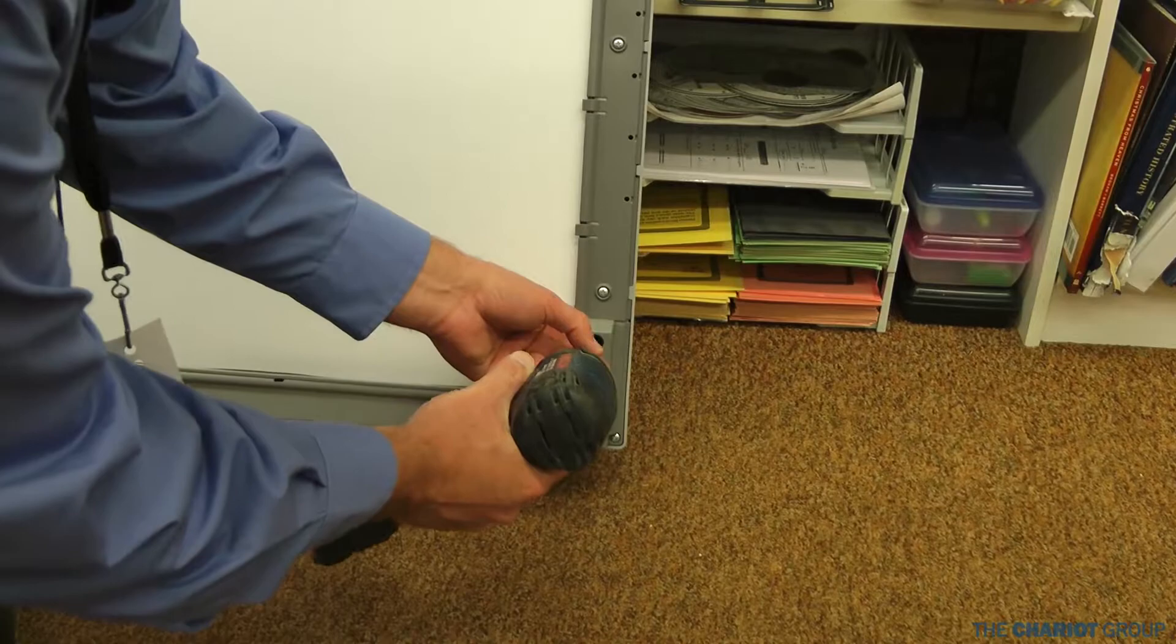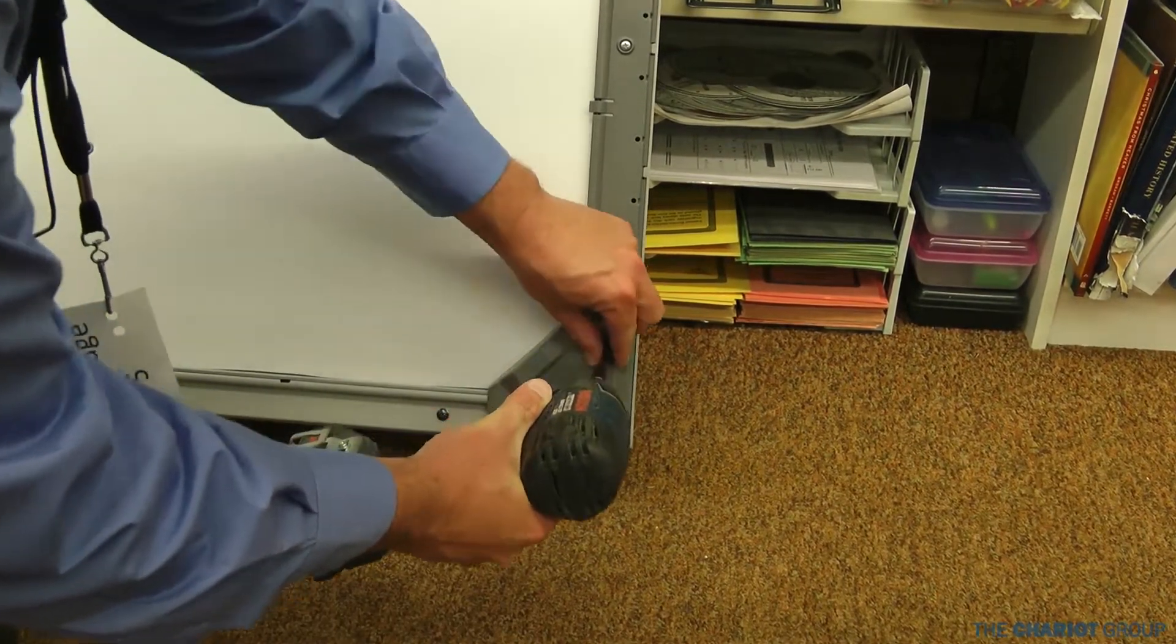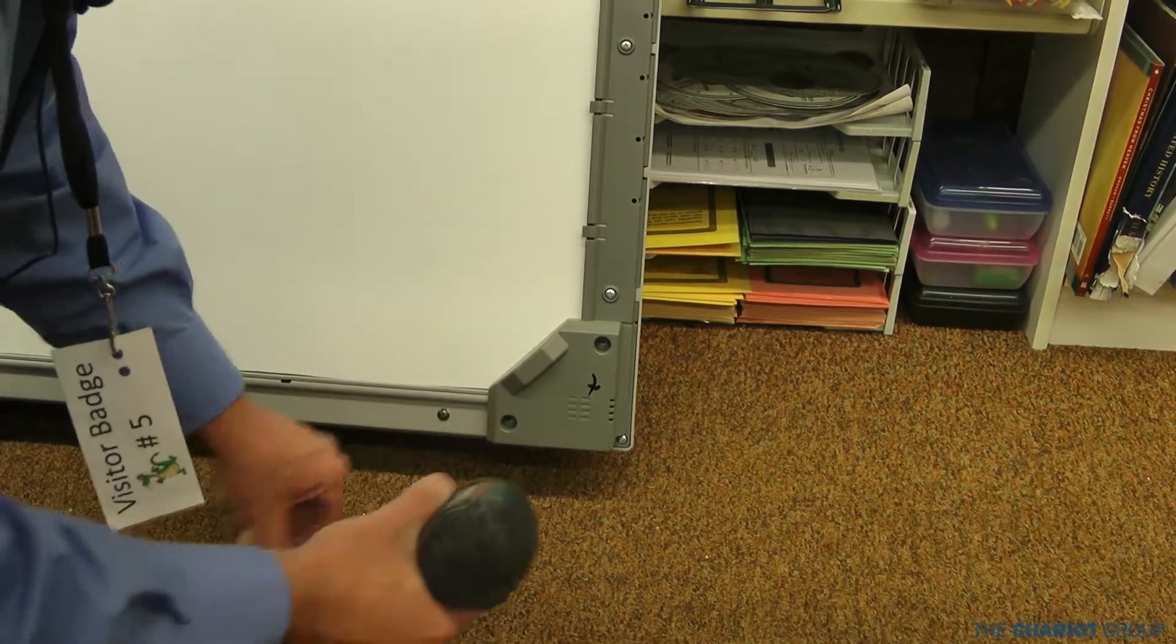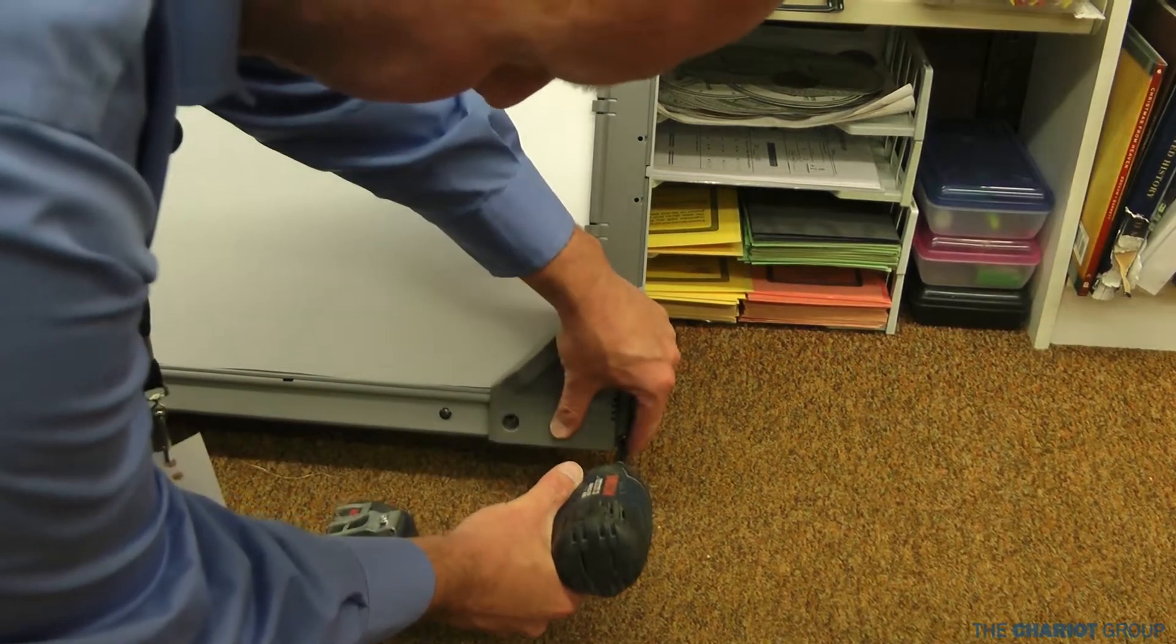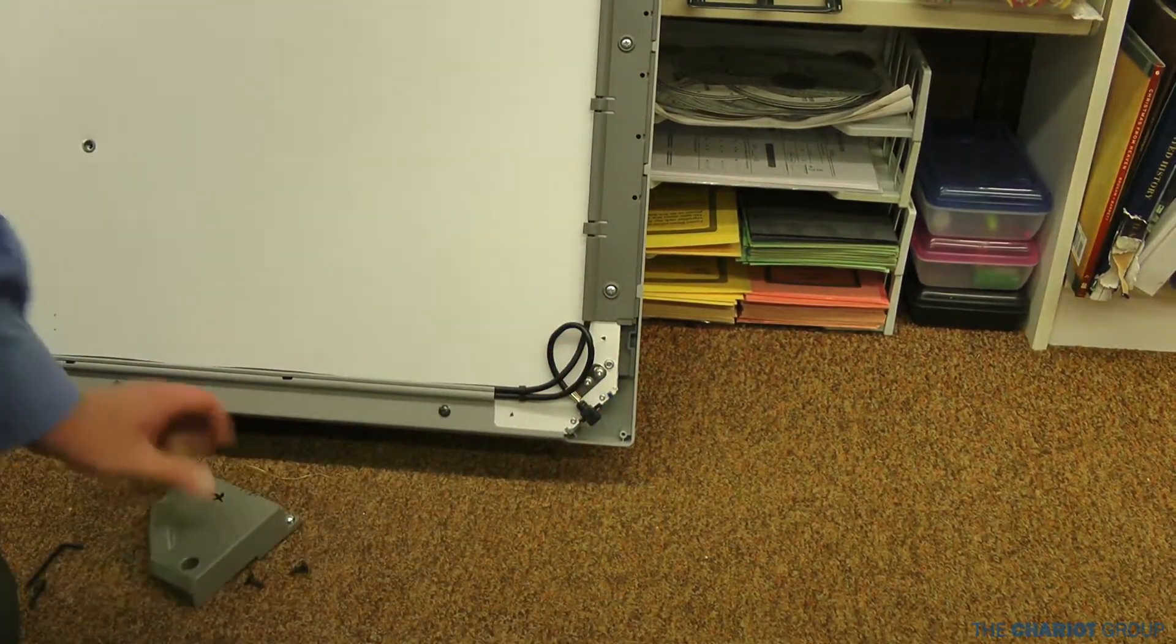So we're going to take three Phillips screws in the corner here, take those out, and then one here in the corner. Pull off the cover and set it aside.